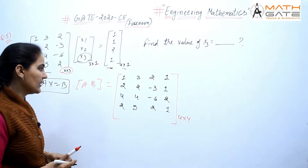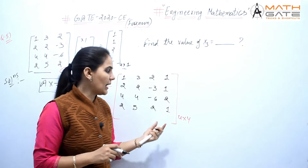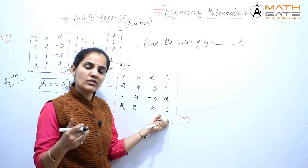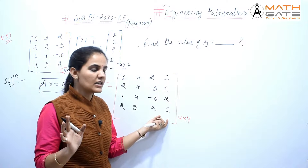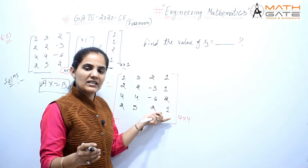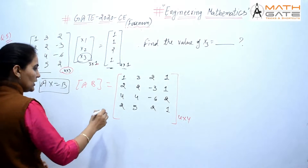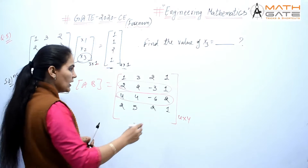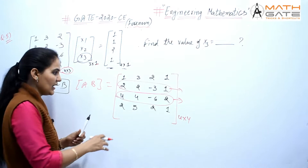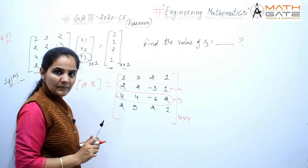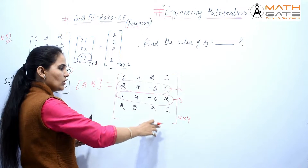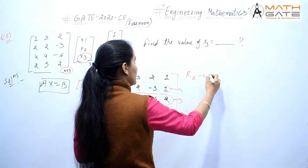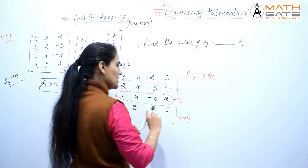We solve this in row echelon form. Looking at row 1 (2, 2, -3 | 1) and row 2 (4, 4, -6 | 2), we can see that if we multiply row 1 by 2, it becomes identical to row 2. So we apply the transformation R2 → R2 - 2R1, which makes row 2 all zeros: 0, 0, 0, 0.